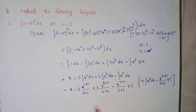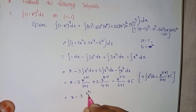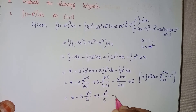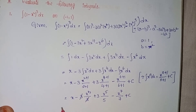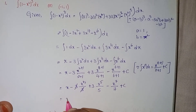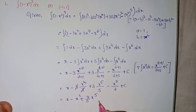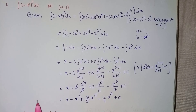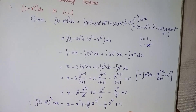Simplify: the 3s cancel in the second term, giving x - x³ + (3/5)x⁵ - (1/7)x⁷ + C. This is the solution of ∫(1 - x²)³ dx.